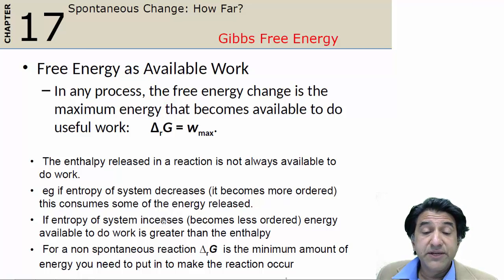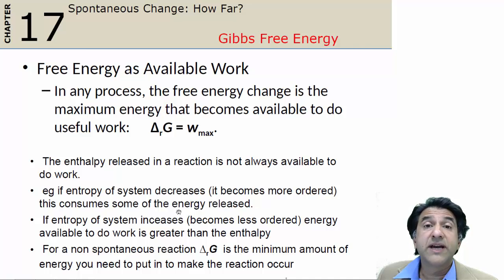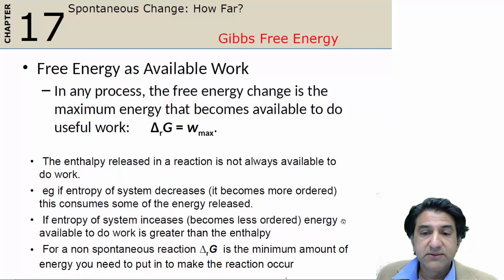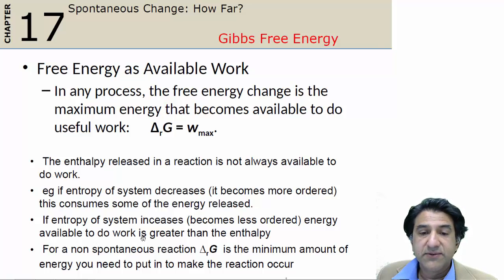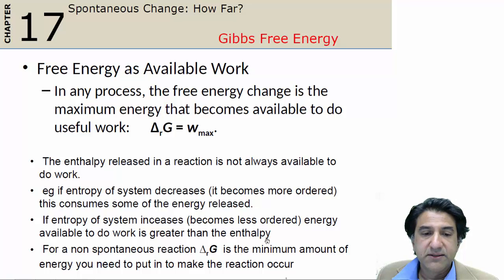On the other hand, if the entropy of the system increases — for example, if the system produces more gases — that would be the system becoming more disordered. Then energy becomes available to do work, because if a system becomes more disordered, we have more work in addition to the enthalpy available.